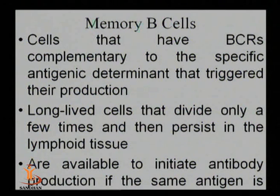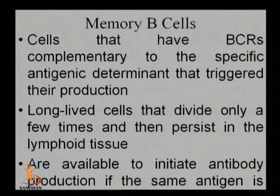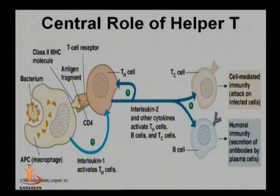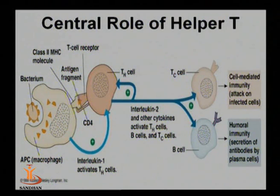Once the same antigen is encountered again in an individual, memory B cells immediately become activated and start to proliferate. That is why the secondary immune response is quite faster compared to the primary immune response.